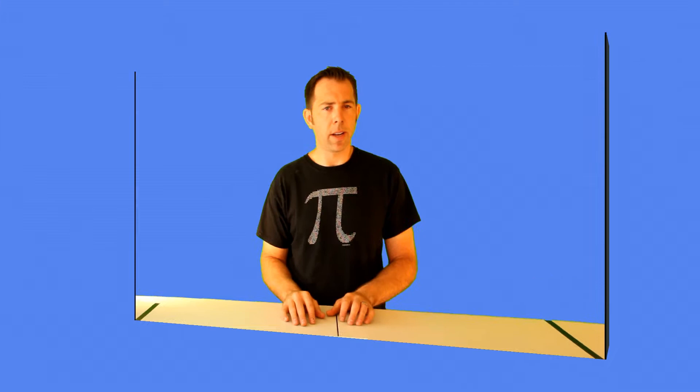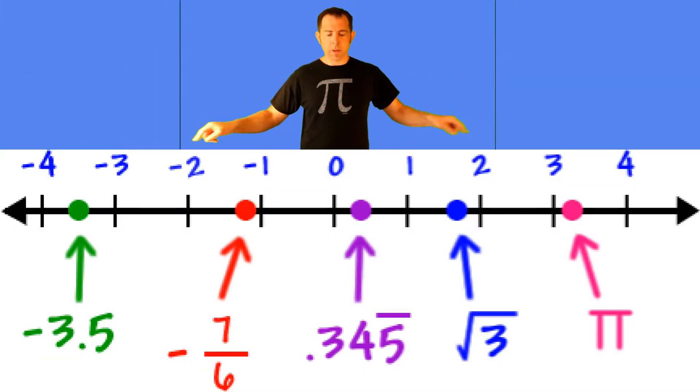We'll start with the real numbers and their place on the number line. So here we have a number line where there's a one-to-one correspondence between the real numbers and points on the line. That means for every real number, there's a corresponding place on this number line.